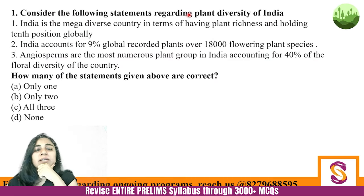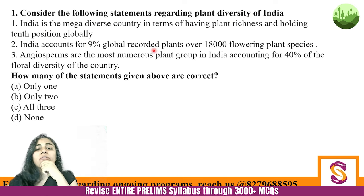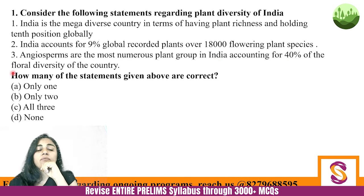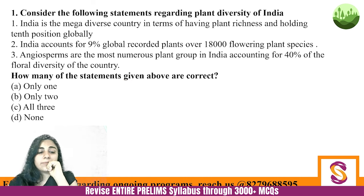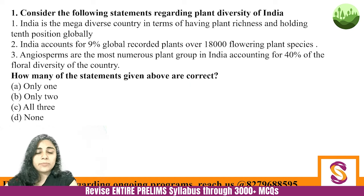Question one: Consider the following statements regarding plant diversity of India. Statement one: India is a mega diverse country in terms of plant richness and holds 10th position globally. Statement two: India accounts for 9% of global recorded plants, with over 18,000 flowering plant species. Statement three: Angiosperms are the most numerous plant group in India, accounting for 40% of the floral diversity. How many of the statements given above are correct? This is a very theoretical question — if you know the basics, you know the answer.